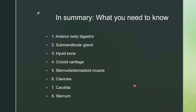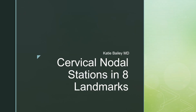In summary, these are the only things you need to know: the anterior belly of the digastric muscle, submandibular glands, hyoid bone, cricoid cartilage, sternocleidomastoid muscle, the clavicles, the carotid sheaths, and the sternum. With these eight landmarks, you can accurately identify which cervical nodal station you're at. Thanks to Dr. Bailey for this great introduction to cervical lymph nodes. If you like the video, be sure to click the like button, subscribe to our channel, and check back for new videos frequently.